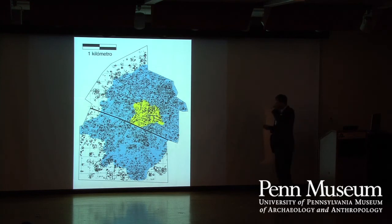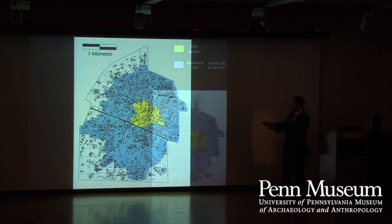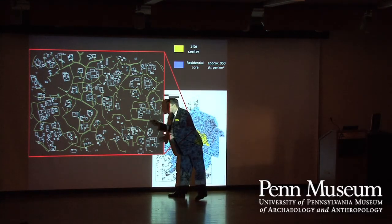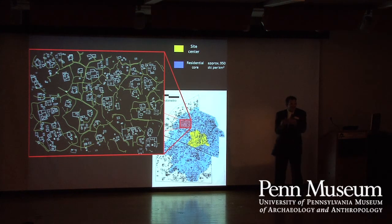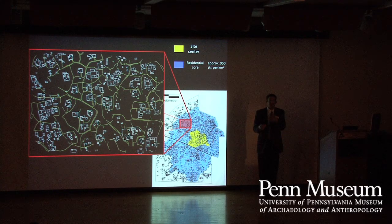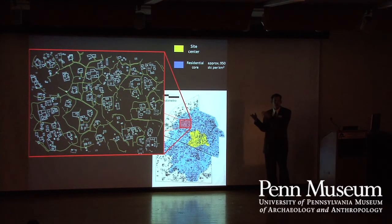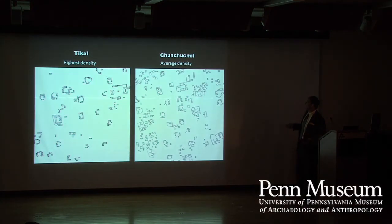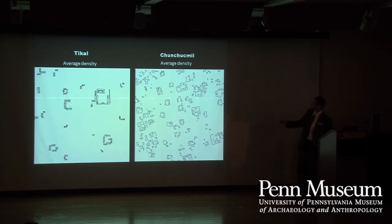Beyond the site center, we found a zone we call the residential core. The density of structures here is 950 per square kilometer. The density of structures is really quite astounding — this is the most densely populated site in the Classic period in the Maya area. Figuring out what these structures actually looked like, with all these little things bumping into each other, required walking around them a number of different times. This is a spot where just using remote sensing might not help you out as much.